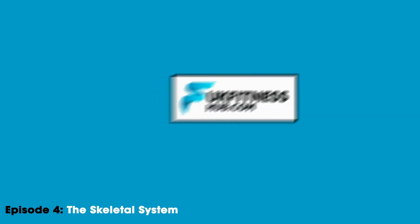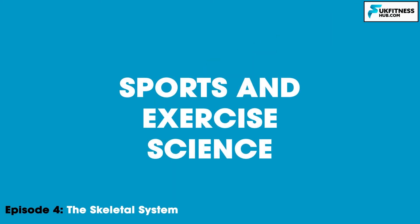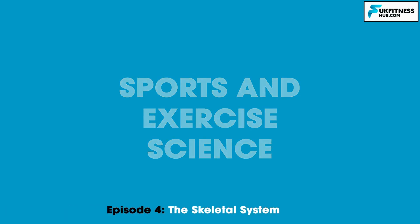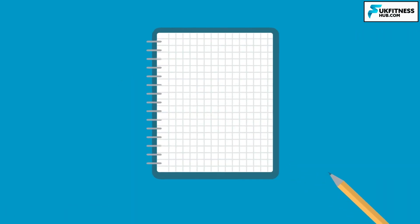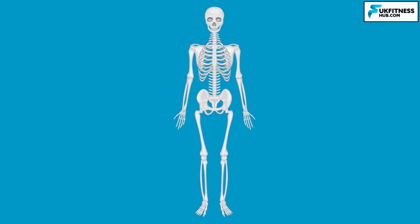Hello and welcome to episode 4 of my sports and exercise science series. We're going to be following on from episode 3 by beginning to learn about the skeletal system. The human skeleton contains approximately 206 bones and 100 joints that offer the body strength and support as well as flexibility and agility.